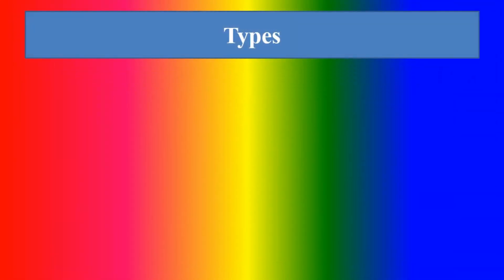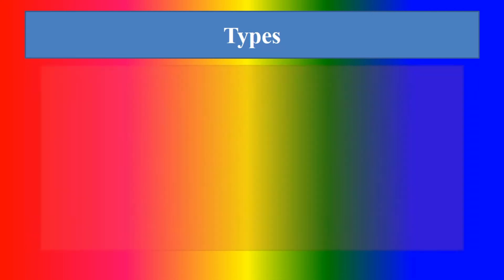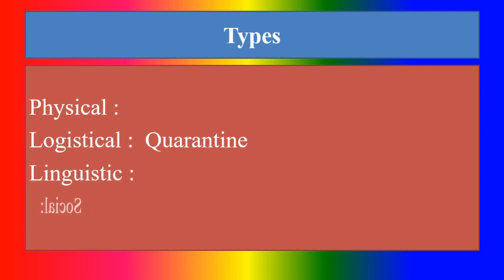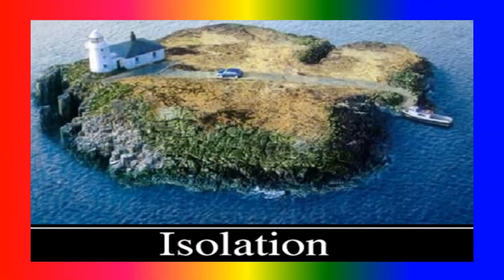Can you list types of isolation? First, physical isolation — logistical isolation, quarantine. Then, linguistic isolation. Next, social isolation.